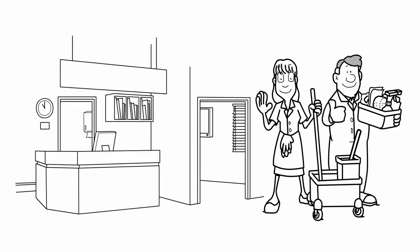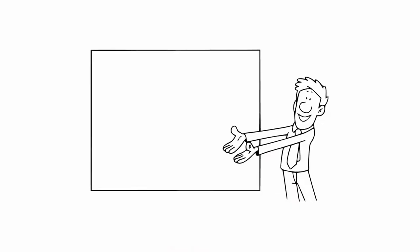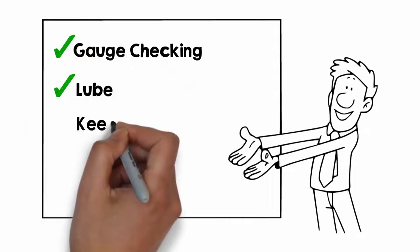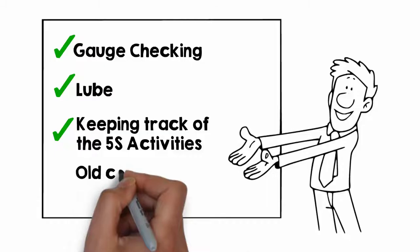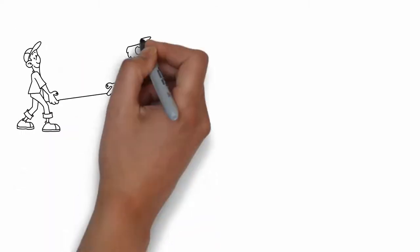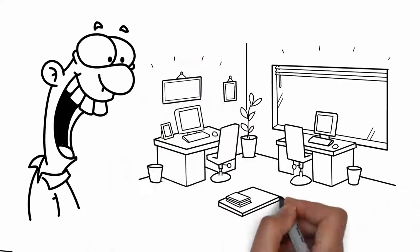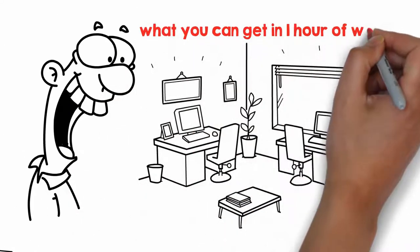Again, cleaning is checking, so in the Shine step you could include gauge checking, lubrication, keeping track of the 5S activities, and removing old communications. If you arrange the Shine in a structured way with all the team members involved, you will be surprised about what you can get in one hour of work.